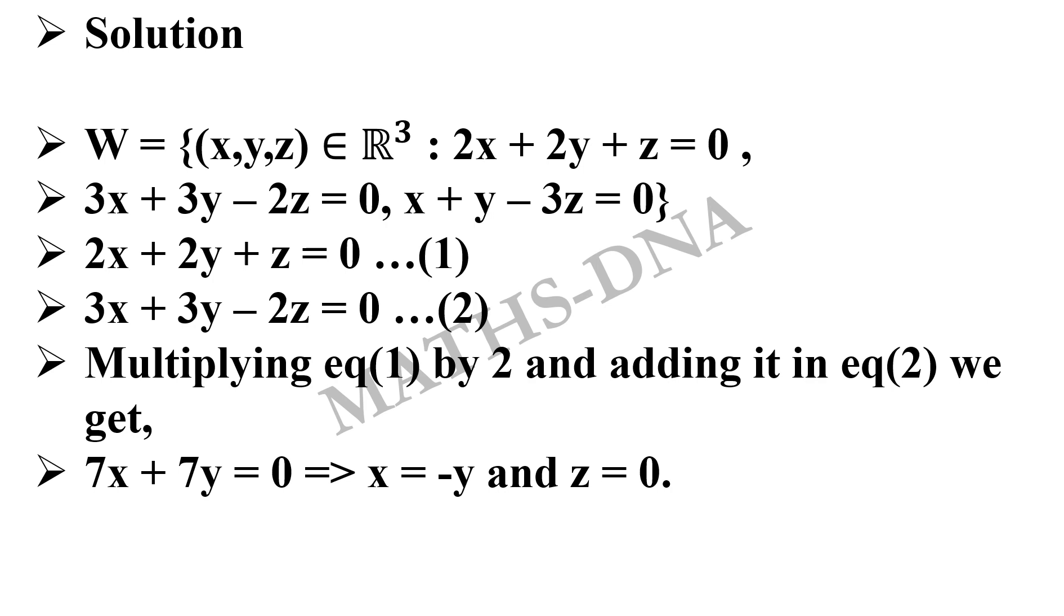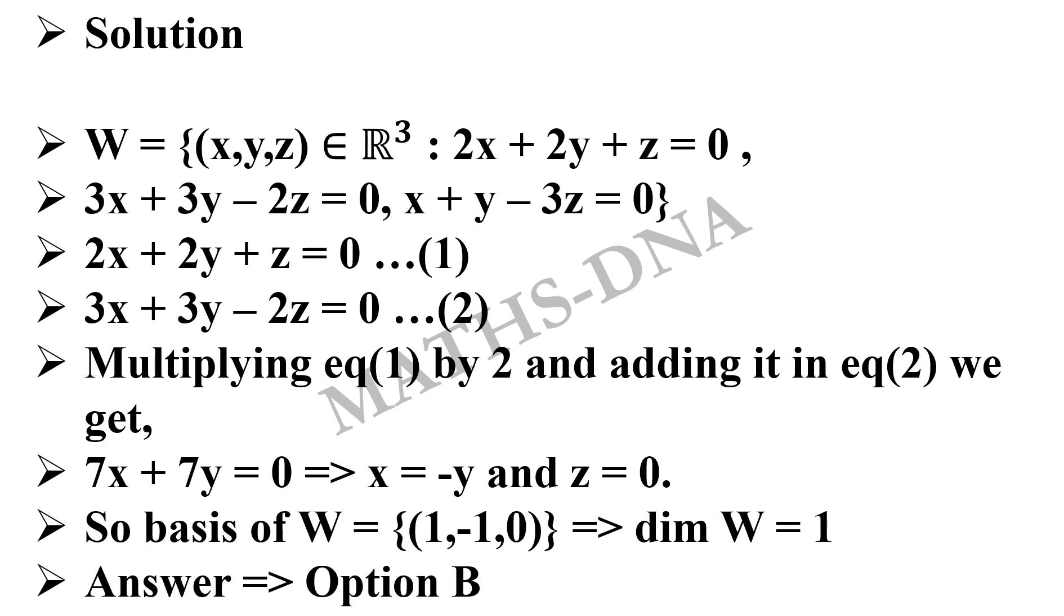Now when we substitute the value of x = -y in any of the 3 equations we get z = 0. So we found our required set and thus the basis of W will be (x, y, z) where z is 0 and x = -y. So (1, -1, 0) which implies that dimension of W is 1 and hence the correct answer is option B.